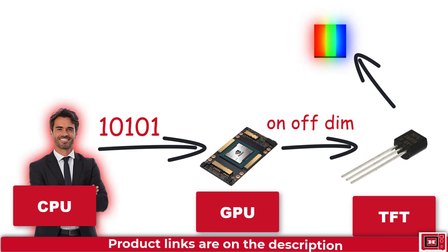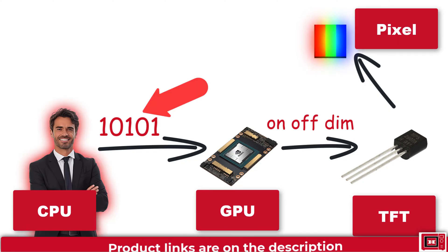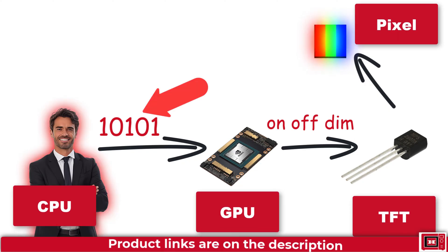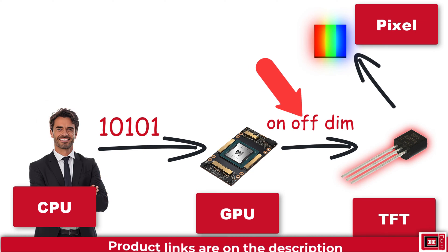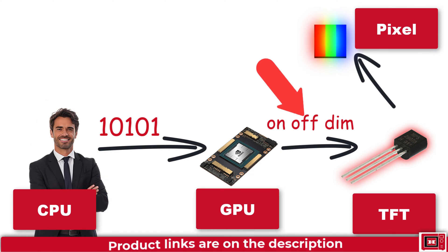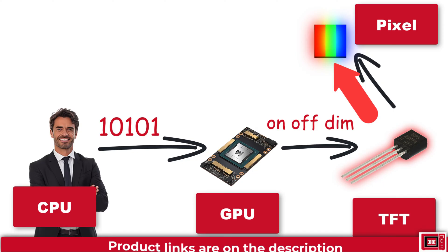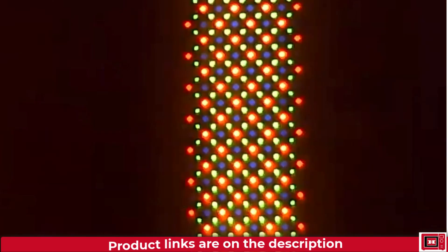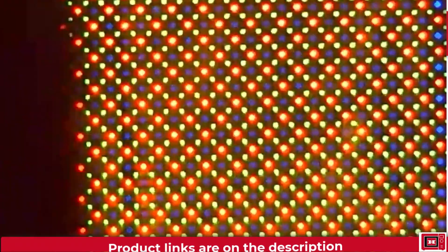The GPU is a translator. It takes instructions from your smartphone or TV, converts it into on and off commands for the TFT to obey. This in turn causes the pixels at different areas of the screen to turn on or off. Just like the light bulb and the switch we talked about earlier.